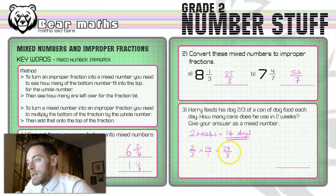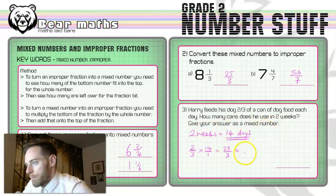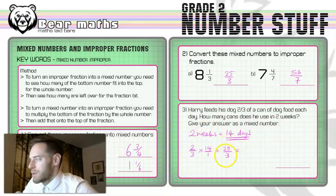So this dog is getting 28 thirds of a can. Now that's obviously a lot more than one can or two cans. And we want our answer as a mixed number because this isn't really contextual. It doesn't really make much sense to us. If I said I'm going to feed my dog 28 thirds of a can over two weeks, people would be like, what are you on about?